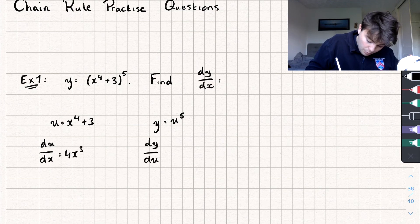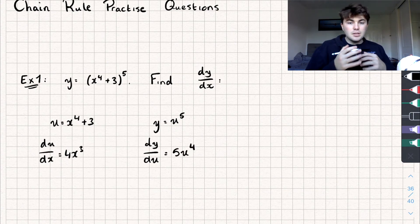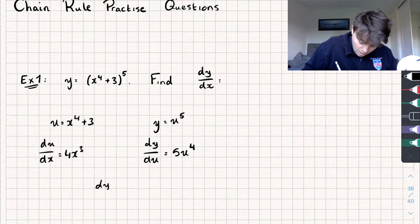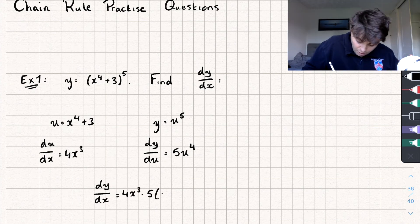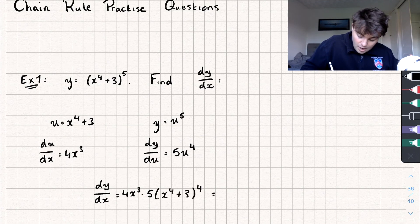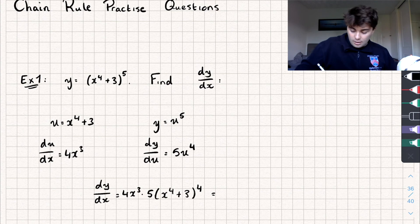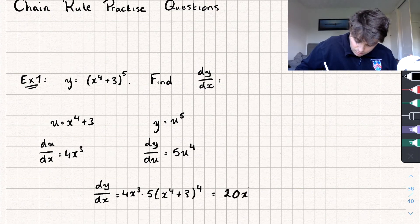Then we're going to find dy by du, which is going to be equal to 5u to the power of 4. To find dy by dx we just multiply these two things together, so we get dy by dx equals 4x cubed multiplied by 5 — and since u equals x to the power of 4 plus 3, that gives us 20x cubed multiplied by (x to the power of 4 plus 3) all to the power of 4. And that's our derivative.